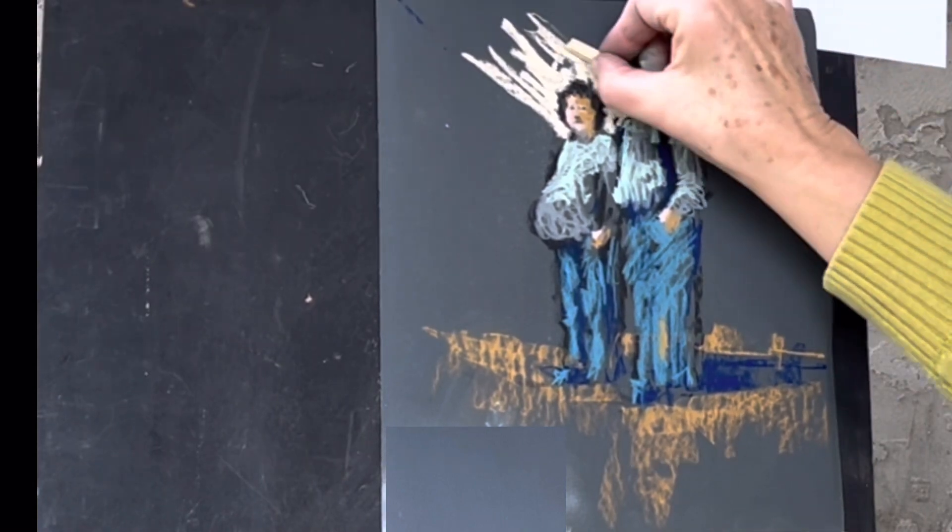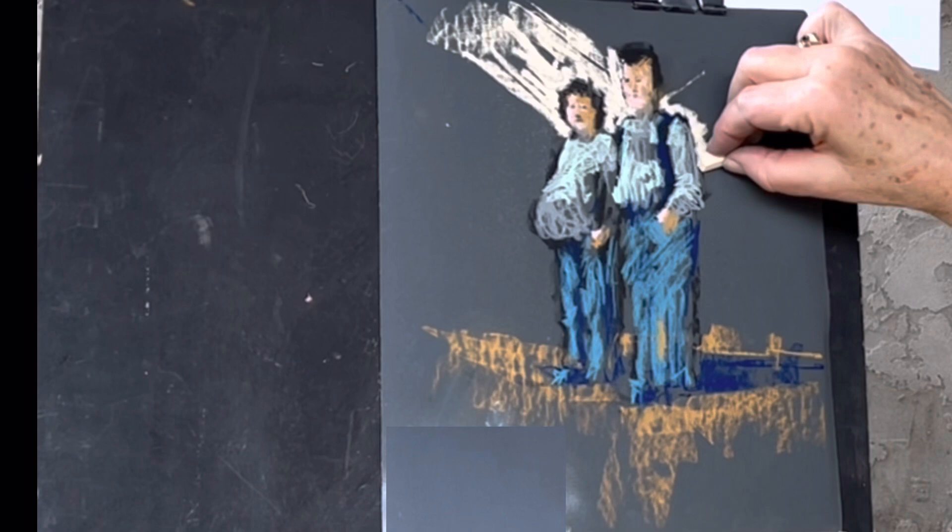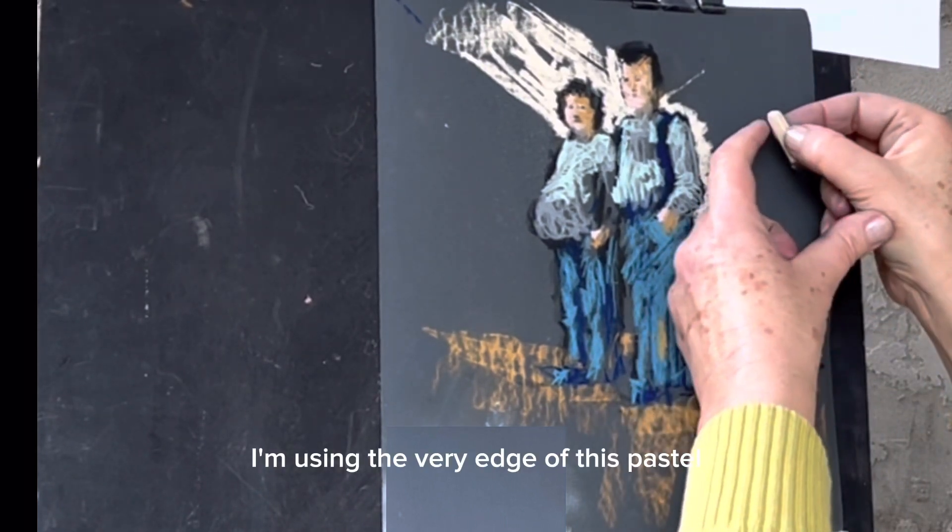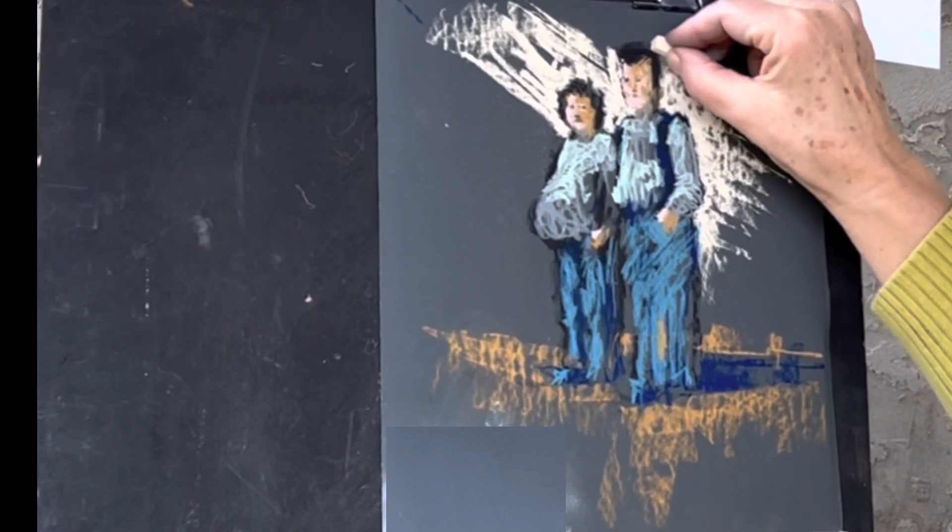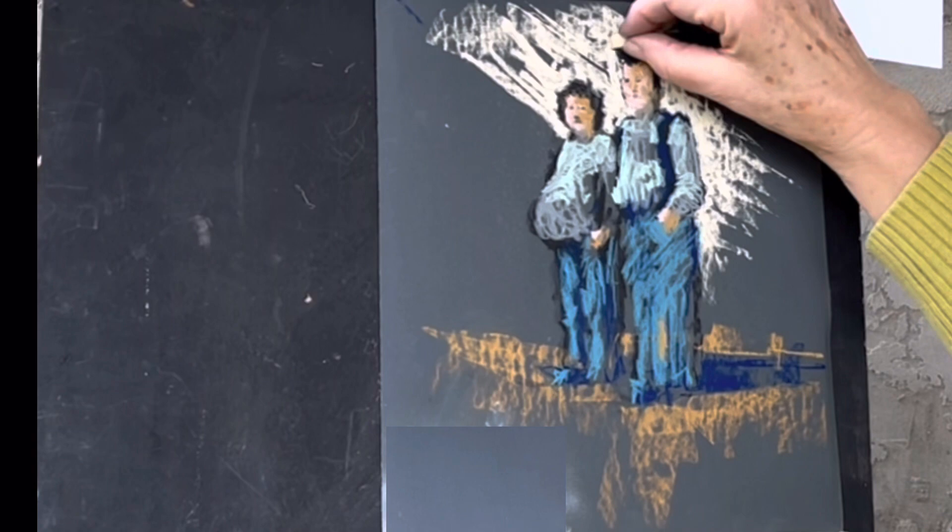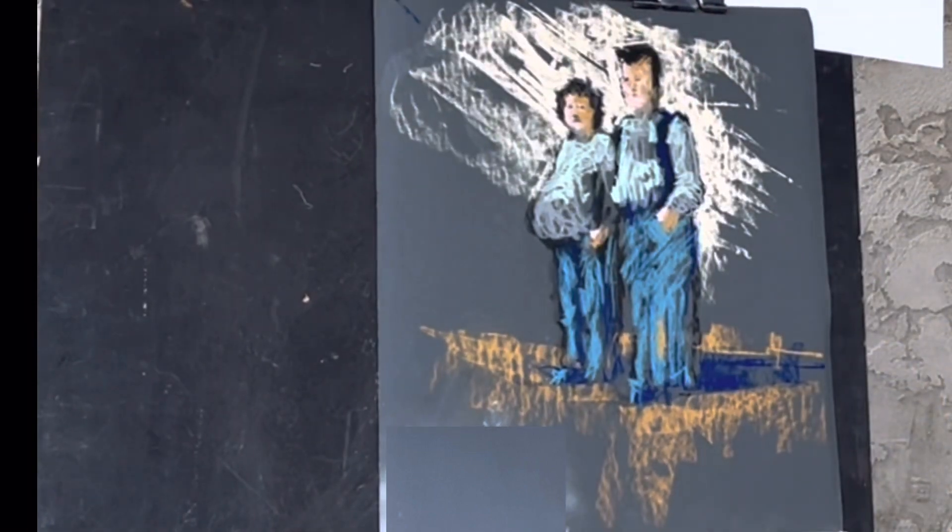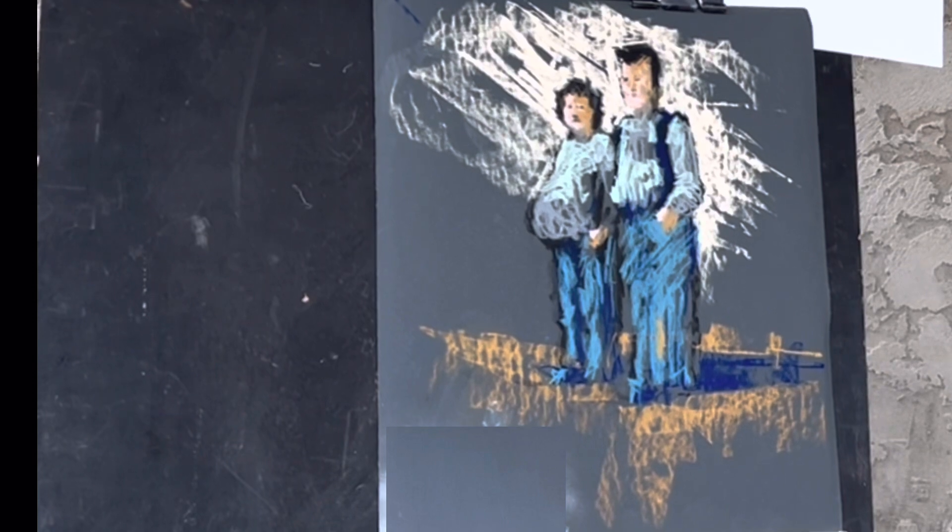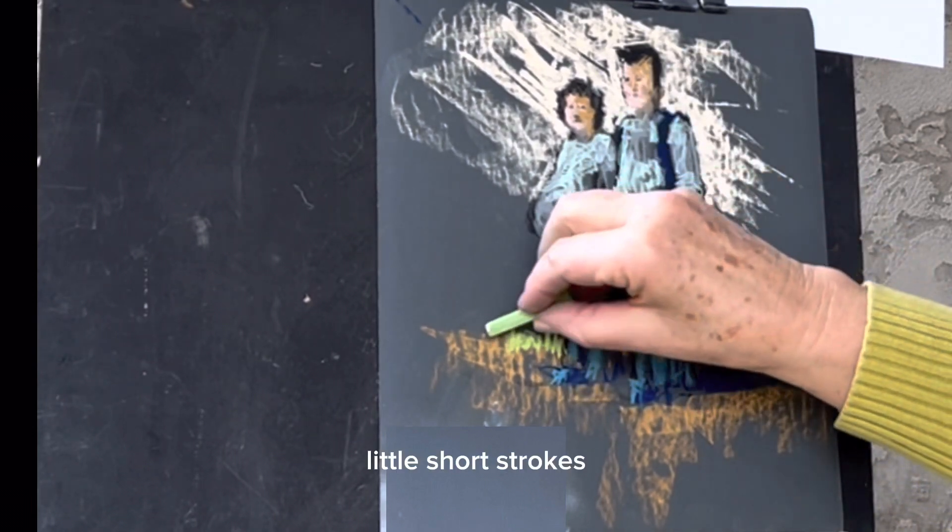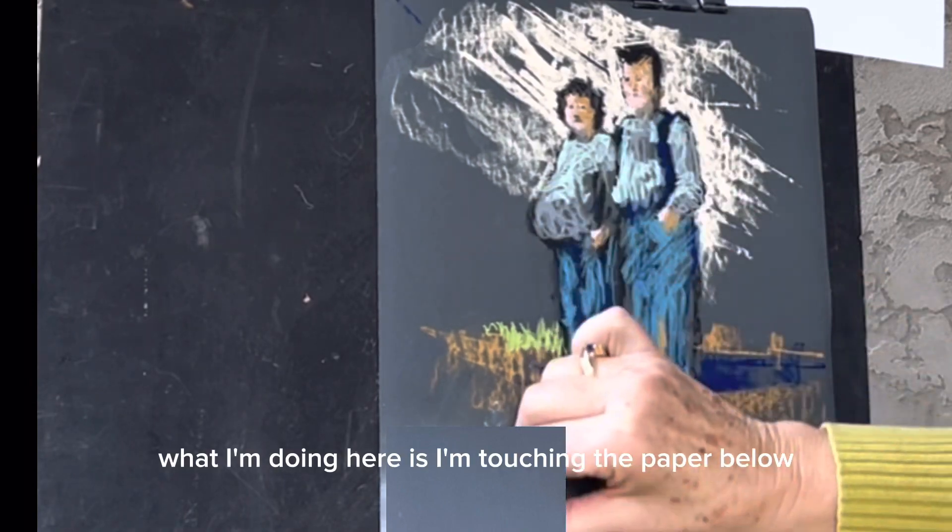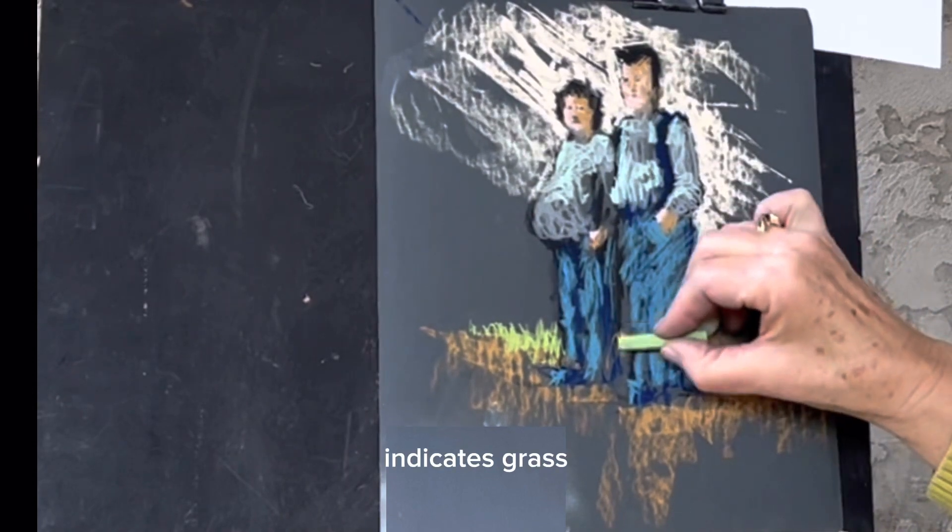I want to define the edge of that face better. I'm using the very edge of this pastel to help kind of outline his body. What I'm doing here is I'm touching the paper below and kind of lifting it as I go up. I'm doing it very quickly and with lots of energy. Kind of indicates grass.